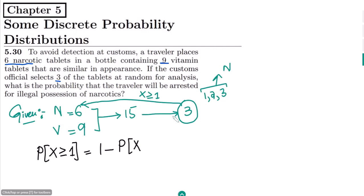none of the narcotic tablets is selected out of these three. So we can also have this one as well. This is the main equation for this question and let me call it equation A.